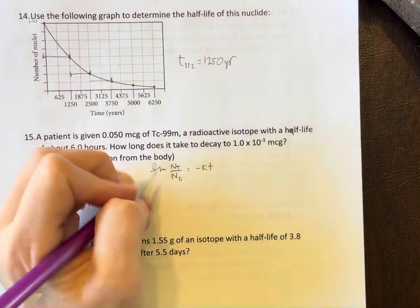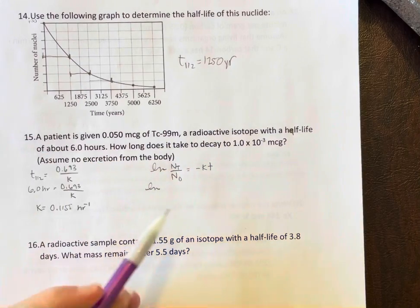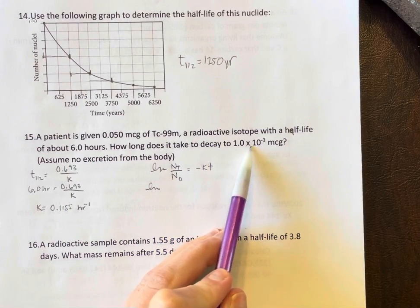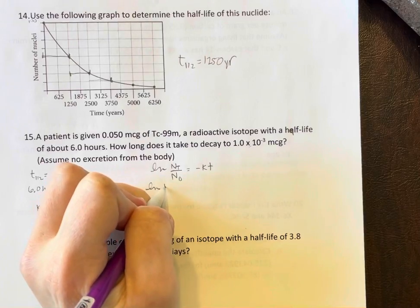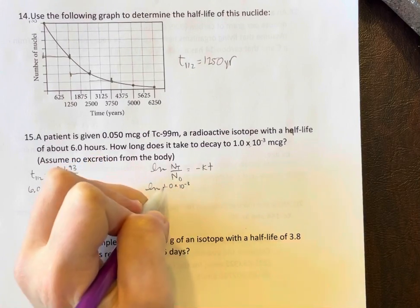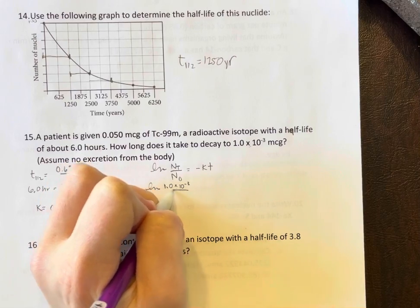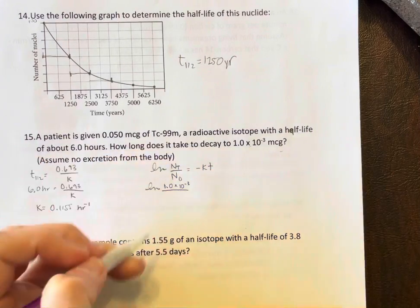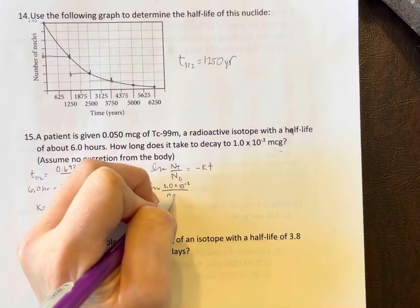Now we can solve this. So our natural log here at our time t that we need to figure out - again, units can go away because they're the same, they're going to cancel each other out.